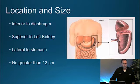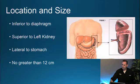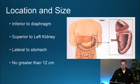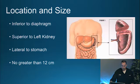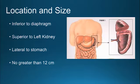Location and size: the spleen is typically located between the 9th and 11th rib space. It is inferior to the diaphragm, lateral to the stomach, and superior to the left kidney. Spleen size is generally no greater than 12 centimeters in length and 7 centimeters in the transverse. The superior lateral portion has a convex shape, and the inferior medial portion has a concave shape.